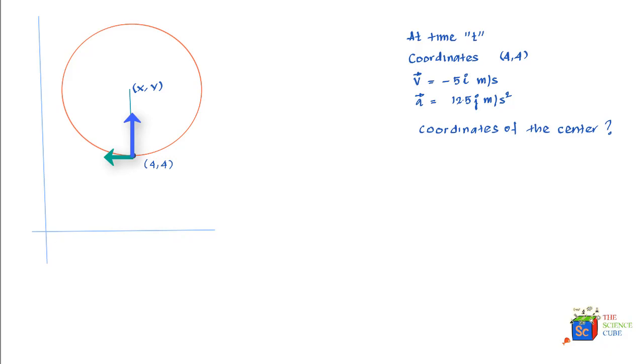Now you would observe that the centripetal acceleration has only a vertical component, 12.5j. So if the particle is at (4,4), the acceleration vector would probably point up like this because it has only a vertical component.